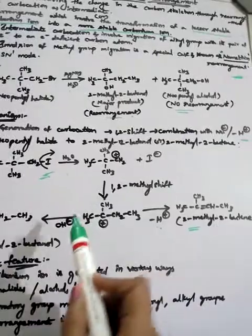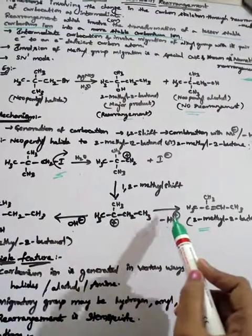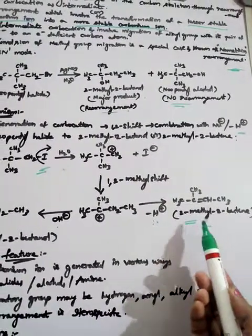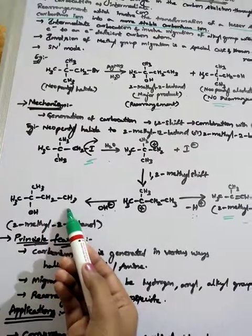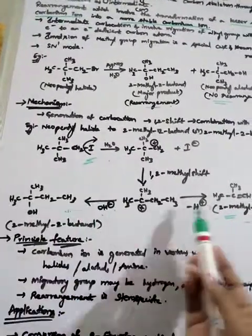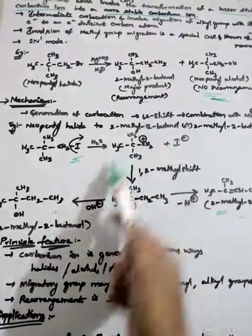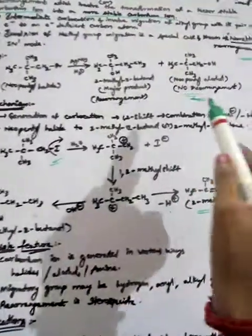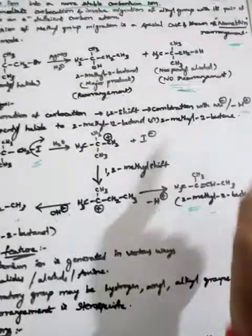The third step involves either combination with a nucleophile or loss of a proton. With loss of a proton, 2-methyl-2-butene is formed. With combination with a nucleophile, 2-methyl-2-butanol is formed as the major product. The minor product neopentyl alcohol is formed without rearrangement.